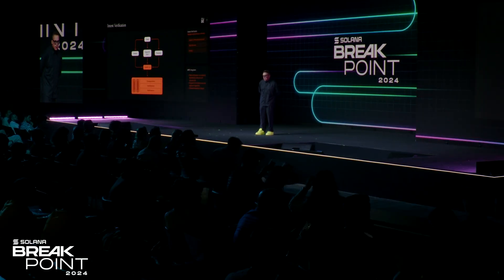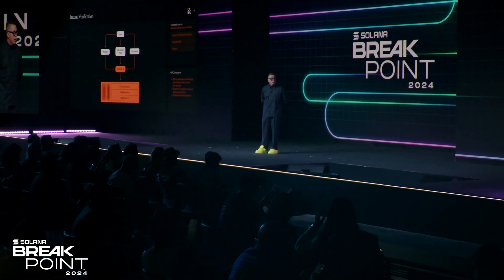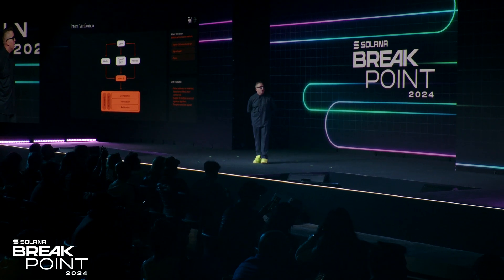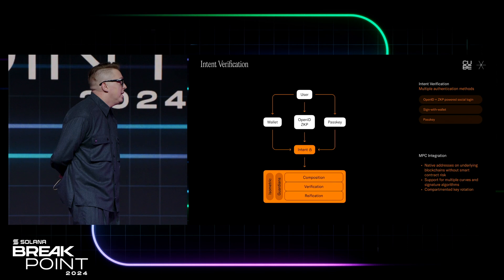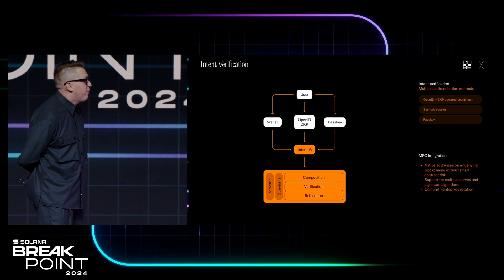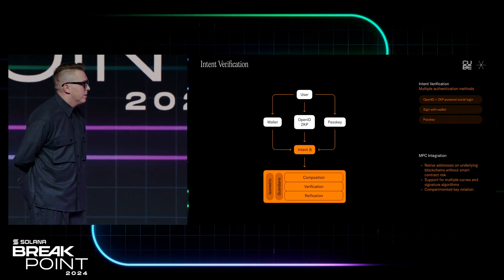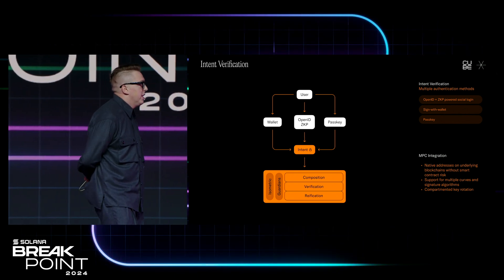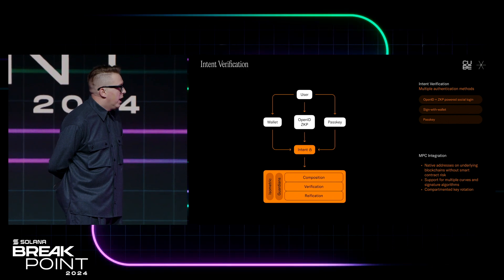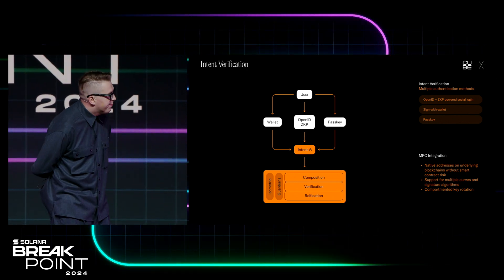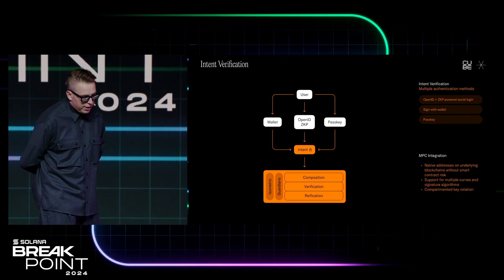On top of that, we will be pushing intent verification. When a user joins the network, they will be able to use non-custodial wallets, OpenID with zero-knowledge proofs, and passkeys to submit their intents. Those will go through the composition layer and the verification and reification of our network, with the MPC integration layer pushing all of that to the different layer ones.